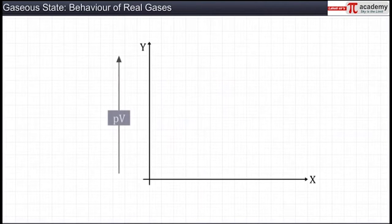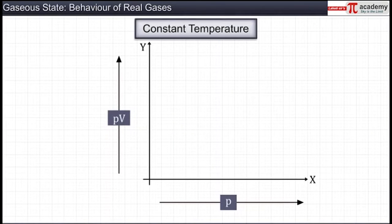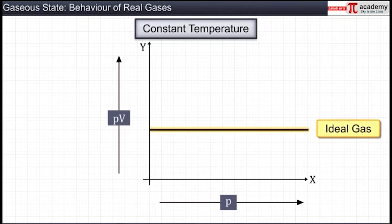If we plot a graph of PV versus pressure at constant temperature, then according to Boyle's law, we should get a straight line parallel to the x-axis, as PV is constant at constant temperature for a fixed amount of gas.